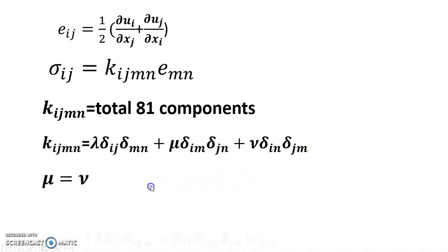K_ijmn can be written as lambda delta_ij delta_mn plus mu delta_im delta_jn plus nu delta_in delta_jm. So sigma_ij equals lambda delta_ij delta_mn plus 2 mu delta_im delta_jn e_mn.